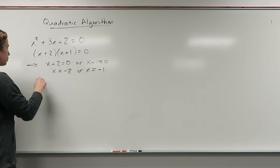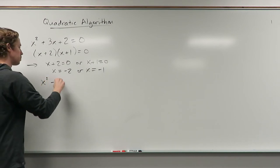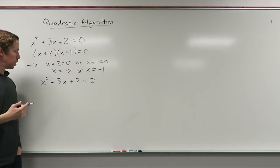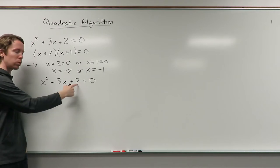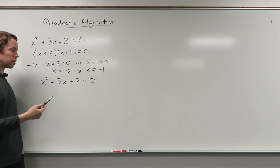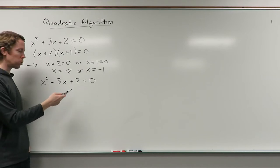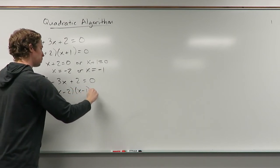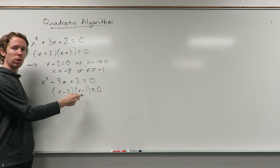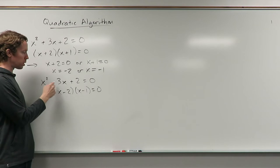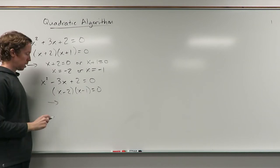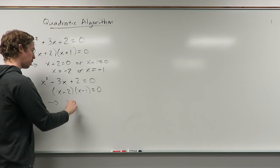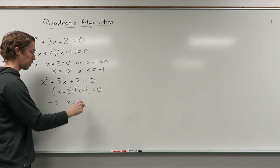I'll give you another example. This time I need two numbers that multiply to positive 2 and add to negative 3. If you think about it for a second, negative 2 and negative 1 will do this. Negative 2 times negative 1 is positive 2. Negative 2 plus negative 1 is negative 3. So x minus 2 equals 0 or x minus 1 equals 0. So x would have to equal 2, and x would have to equal 1.